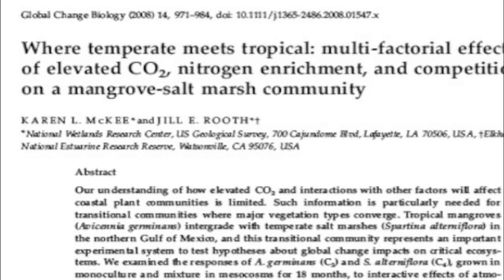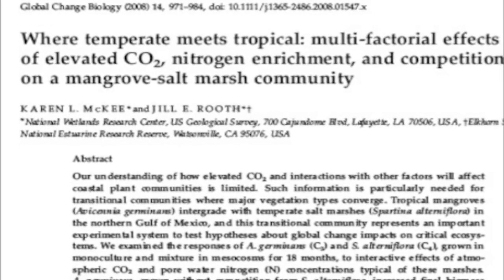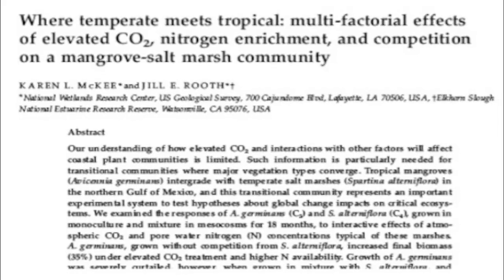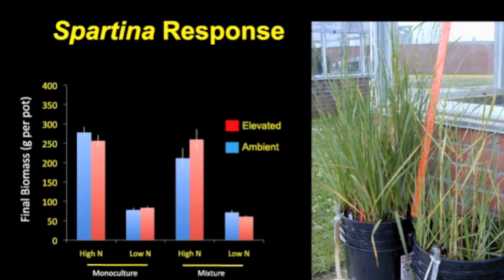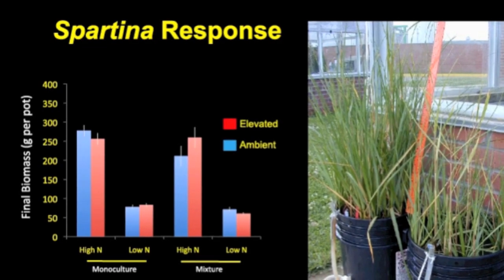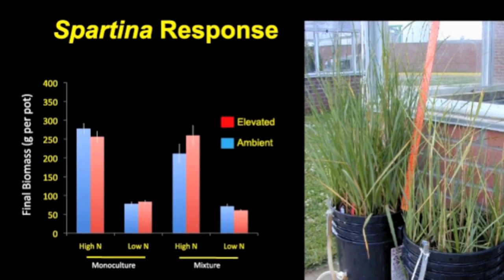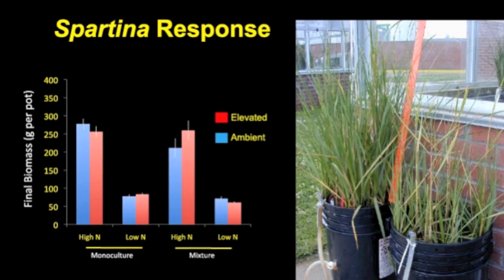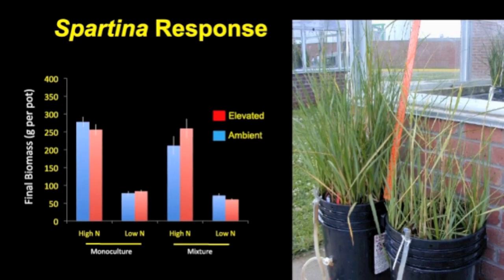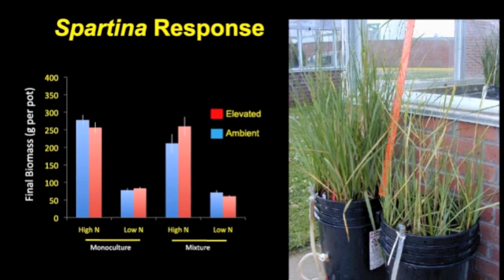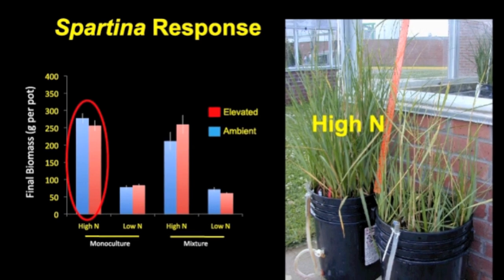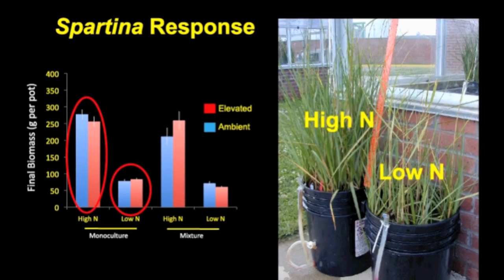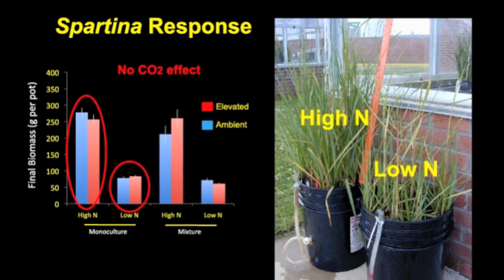The results of this study, which were published in the refereed journal Global Change Biology, provided some important insights. The graph to the left shows the final biomass of the C4 grass, Spartina, in grams per mesocosm, and on the right is a photograph taken just before the end of the experiment. The data in the photograph clearly show a strong response to higher nitrogen, which caused higher stem density in taller plants compared to low nitrogen. There was no effect of CO2 as predicted.